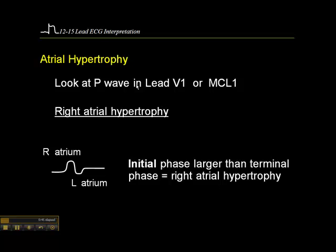We want to look for P waves in V1 or MCL1 to determine whether a patient has atrial hypertrophy. Oftentimes when we're monitoring patients on lead two, we'll see P waves that may be notched. When we look at V1, we'll see a P wave which is biphasic.